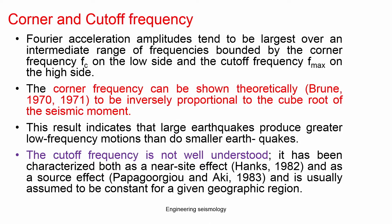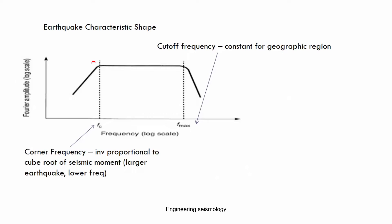We have seen that the corner frequency is basically inversely proportional to the cube root of the seismic moment. Depends upon the seismic moment — and the seismic moment is a function of magnitude — so, depending upon the magnitude of the earthquake, the corner frequency keeps changing. The corner frequency is inversely proportional to the cubic root of seismic moment.